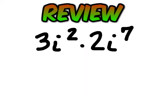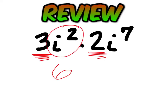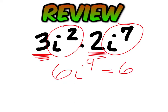I'll work this one out. If you have to multiply two imaginary numbers together, all you do is multiply the coefficients: 3 times 2 is 6. Then multiply the imaginary numbers by adding the exponents: 2 and 7 is 9. From there you simplify — i to the ninth: we know i to the eighth is 1, so i to the ninth would just be i. The answer is 6i.